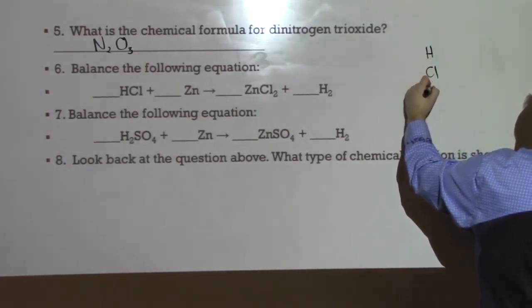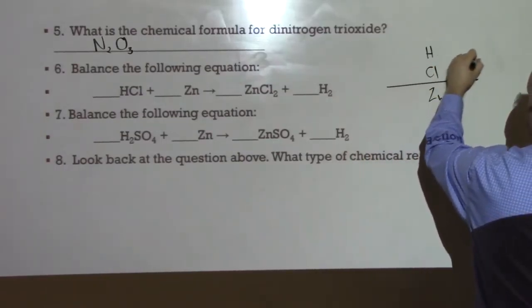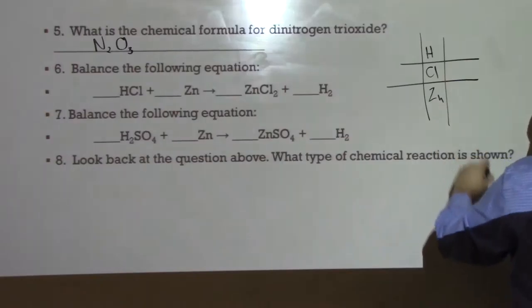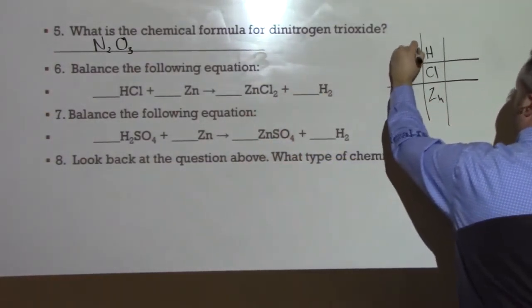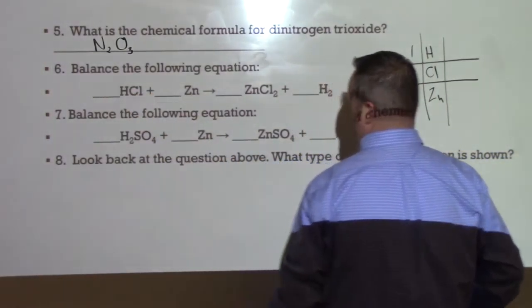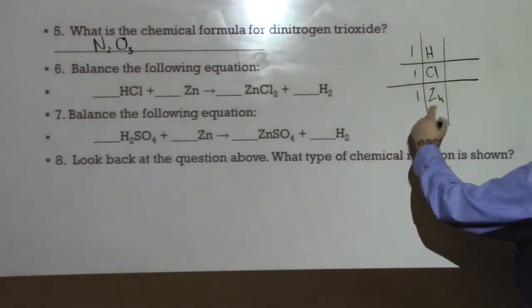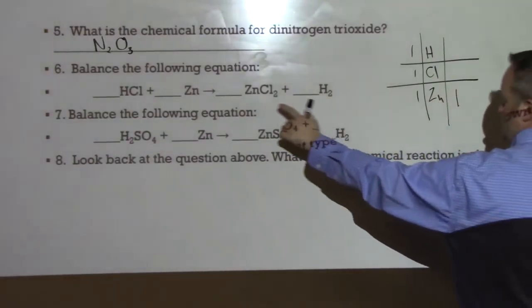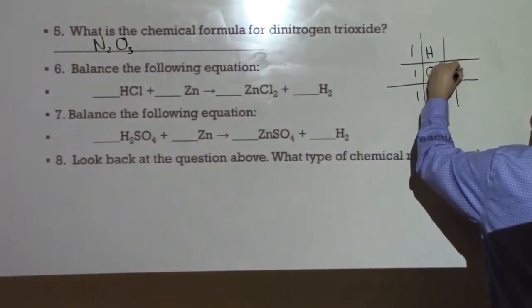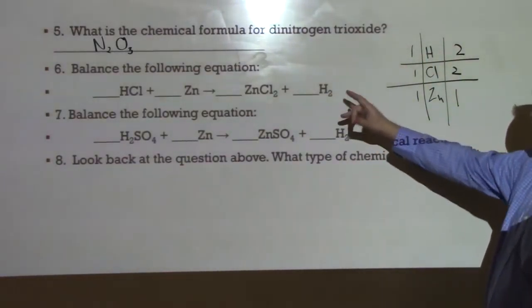Balancing the next equation. To do this, we need to set it up in a little table. And because of the way this is structured, I'll write my table over here. So I'm going to have hydrogen, chlorine, and zinc. So I'm only working with three elements there. So I make my table, I count what I have currently, and I have one, one, and one of the three elements on the reactant side of the table.